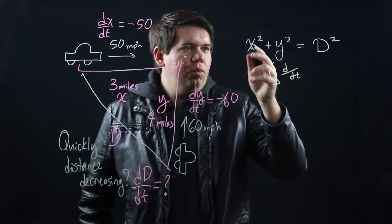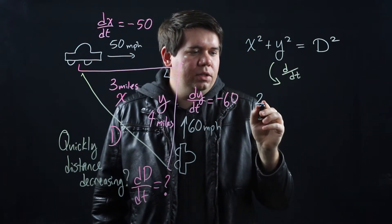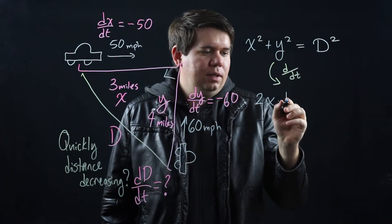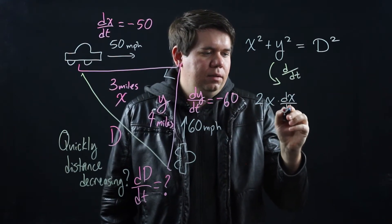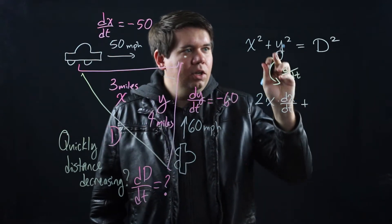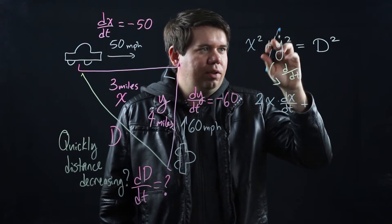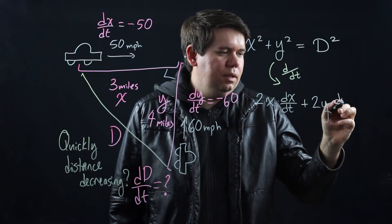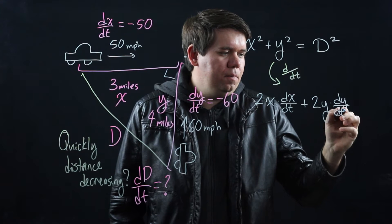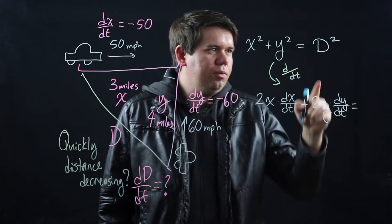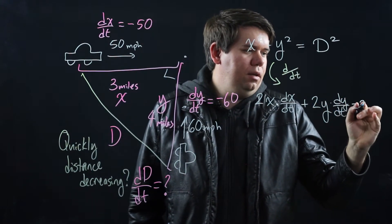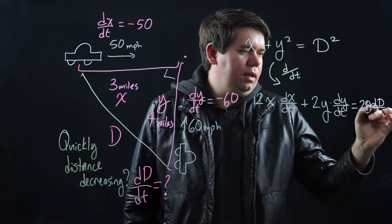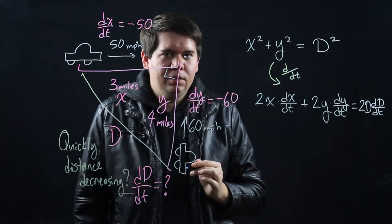What does that give us? Well the derivative of x squared becomes 2x and then by the chain rule times dx/dt plus your y which is some function of t becomes its derivative of y squared is 2y times dy/dt and that will come out to equal the derivative of d squared which is 2d the derivative of d with respect to time.